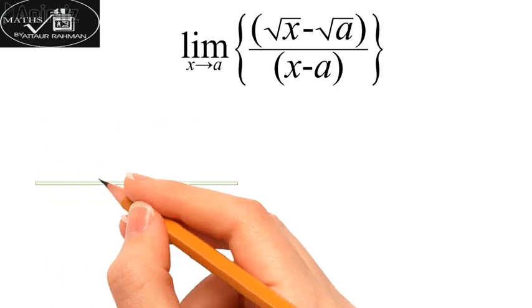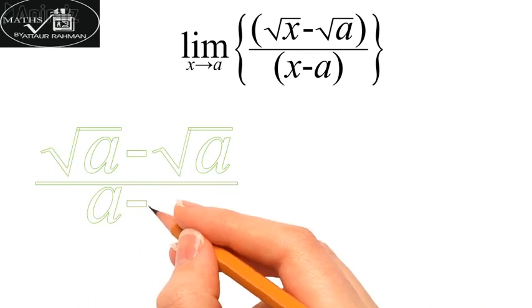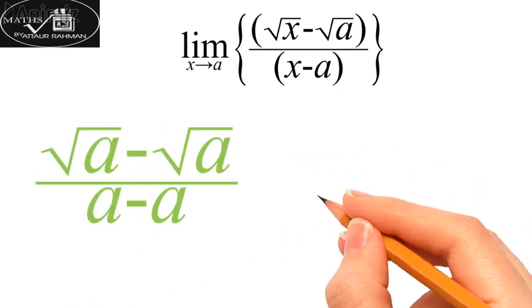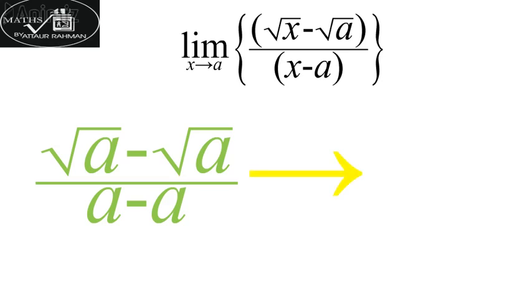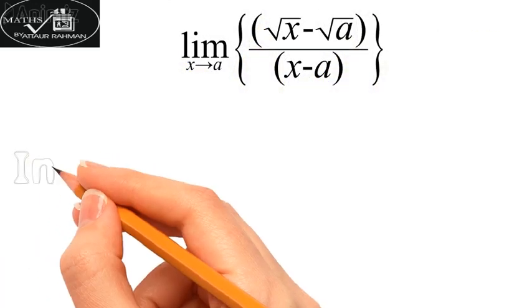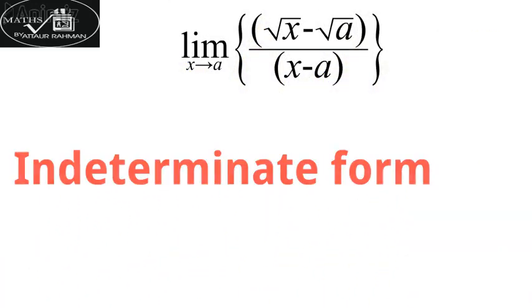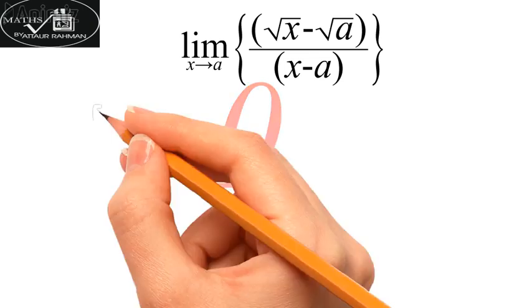For this we will replace x by a. After doing this we get the form of the limit: 0/0, which is one of the indeterminate forms. Such forms can be dealt with by one of the following: